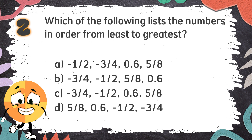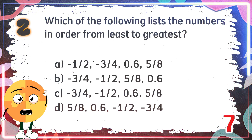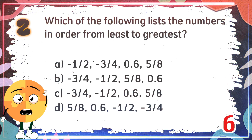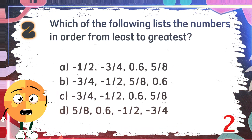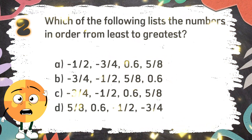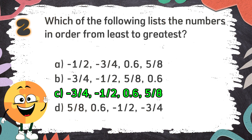C. negative 3 fourths, negative 1 half, 0.6, 5 eighths. D. 5 eighths, 0.6, negative 1 half. The correct answer is C.